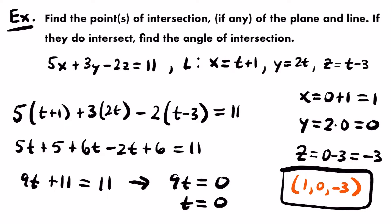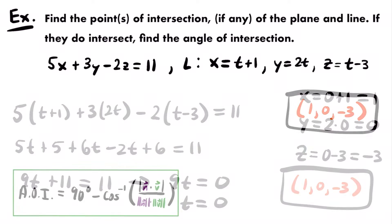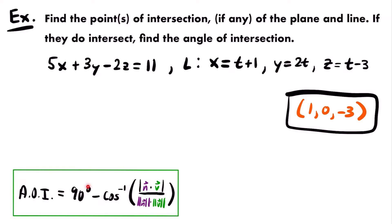Now we need to find the angle of intersection. The formula is: angle equals 90 degrees minus the inverse cosine of the absolute value of the dot product between the normal vector of the plane and the direction vector of the line, divided by the product of their magnitudes. We need the normal vector of the plane and the direction vector of the line.